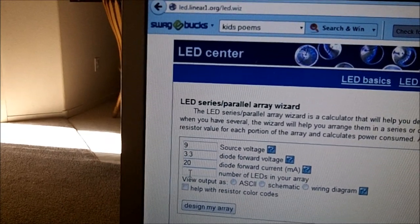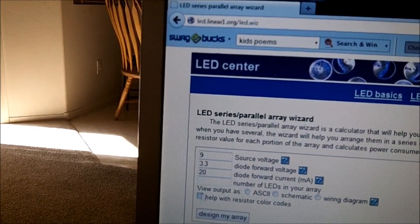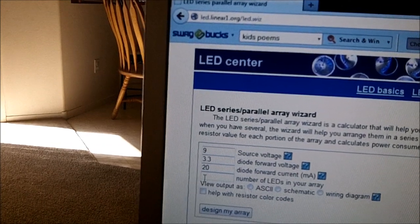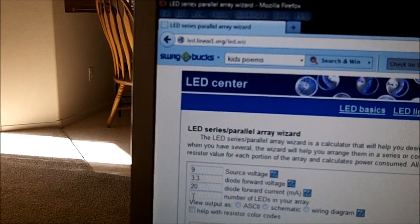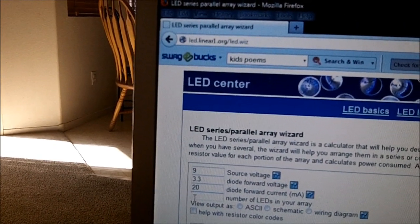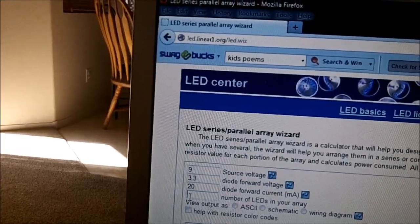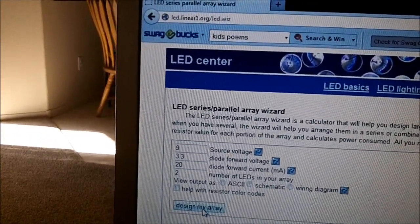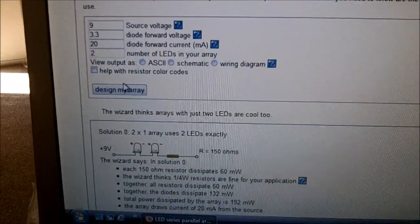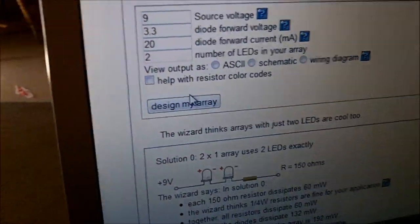The number of LEDs, let's just say 2. If you're wanting to do light buckets, you could type in 4 or 5. If you're redoing the lights on the front of your truck, 2. And then it shows design my array. It tells you exactly how to do it.